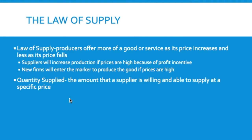Quantity supplied is the amount that a supplier is willing and able to supply at a specific price. When we look at supply schedules and supply graphs, we're looking at quantity supplied at any given price — how much is a producer willing to supply at a certain price?